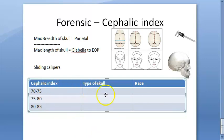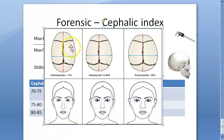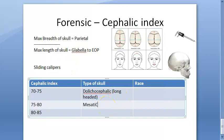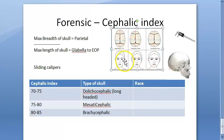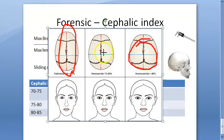Now the type of skull: a cephalic index of 70 to 75 is called dolicocephalic — it is long-headed. 75 to 80 is mesaticephalic — that is somewhere in between, so it is medium-headed. Then 80 to 85 is brachycephalic — this will be short-headed. So dolicocephalic is long, brachycephalic is short, and mesaticephalic is somewhere in between.